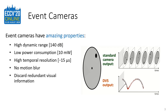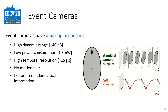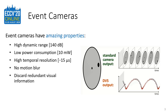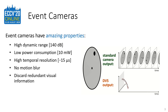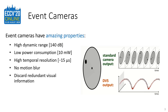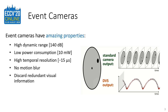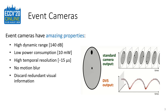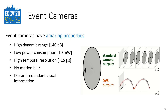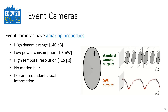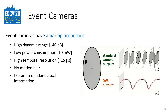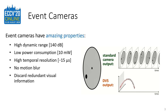Event cameras are bio-inspired vision sensors that operate radically differently from standard cameras, as you can see in the animation on the right. Instead of capturing dense brightness images at a fixed rate, event cameras process incoming light by measuring the brightness changes at each pixel independently, thereby discarding redundant visual information. If the brightness change at one pixel exceeds a threshold, an event is triggered at that location. The resulting event stream has a much higher temporal resolution compared to a standard camera.